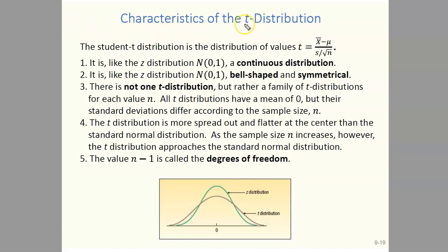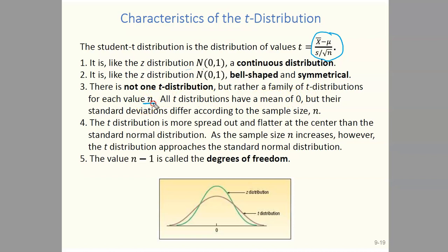Now let's note some characteristics of the t distribution. The student t distribution is the distribution of the quantity: sample mean x bar minus the population mean, divided by the sample standard deviation divided by the square root of n. The student t distribution is a continuous distribution like the z distribution. It is also bell-shaped and symmetric about the mean. However, there is not one t distribution — there is a family of t distributions dependent on n, your sample size. All t distributions have a mean of zero, but their standard deviation differs depending on n.